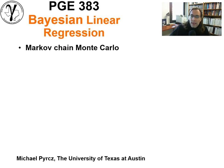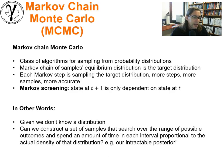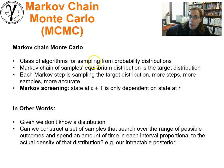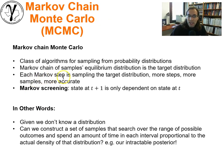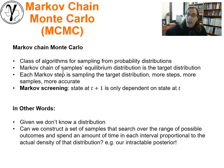Let's talk about some of the fundamental concepts behind Markov chain Monte Carlo. First of all, it is a class of algorithms for sampling from probability distributions. A Markov chain of samples — their equilibrium distribution should be equal to the target distribution that we're seeking after. Each Markov step is sampling from the target distribution. More steps means more samples, and that'll be a more accurate assessment of the distribution.